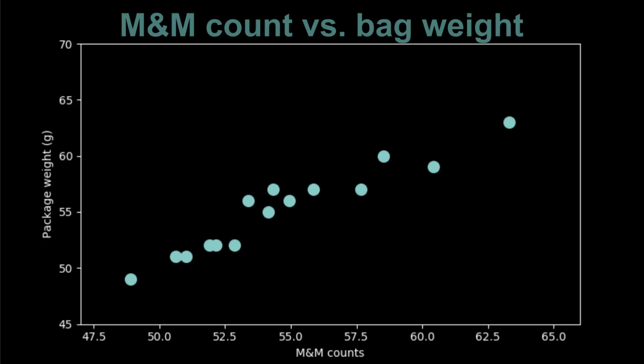Because this appears so linear, let's fit a straight line model to it. The equation of a line is the y value is equal to the x value times the slope plus the y-intercept.